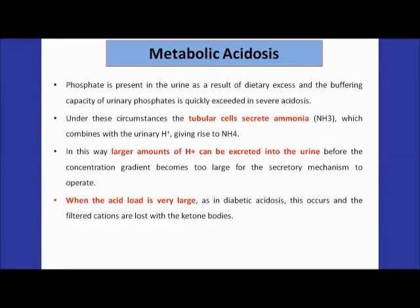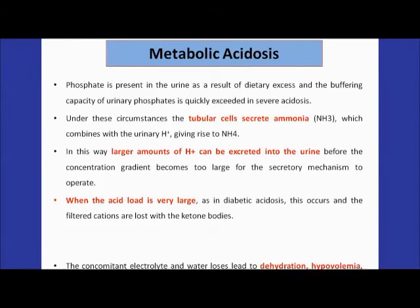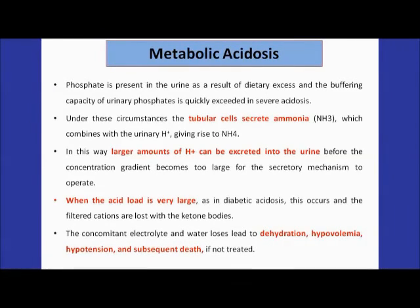When the acid load is very high — as in diabetic acidosis — filtered cations are lost along with ketone bodies in the urine. The concomitant electrolyte and water losses lead to dehydration, hypovolemia, hypotension, and subsequent death in patients suffering from IDDM.